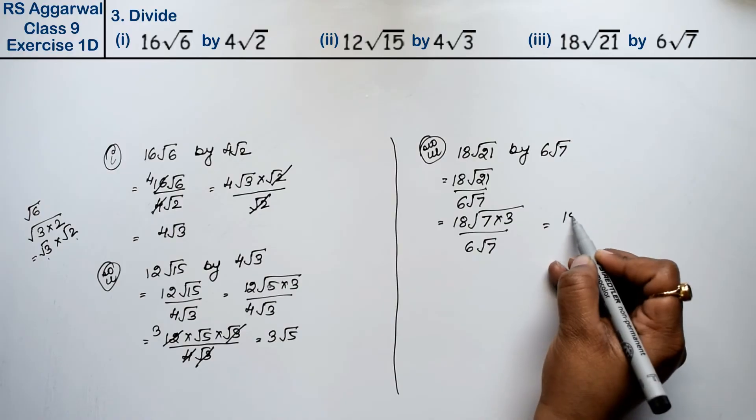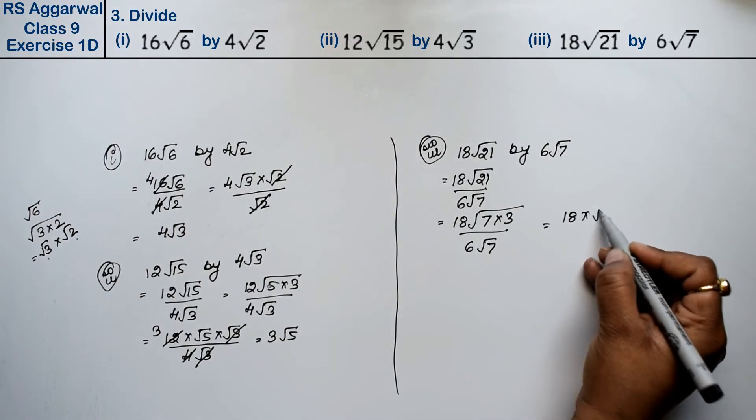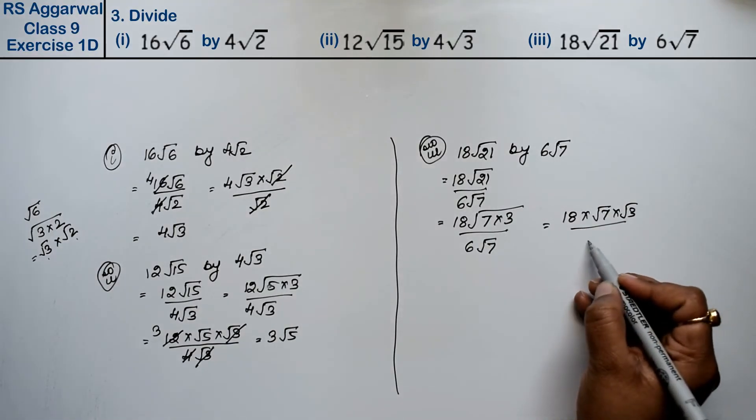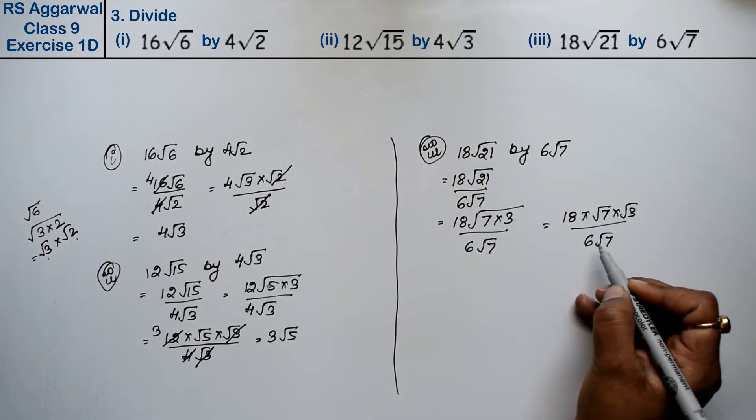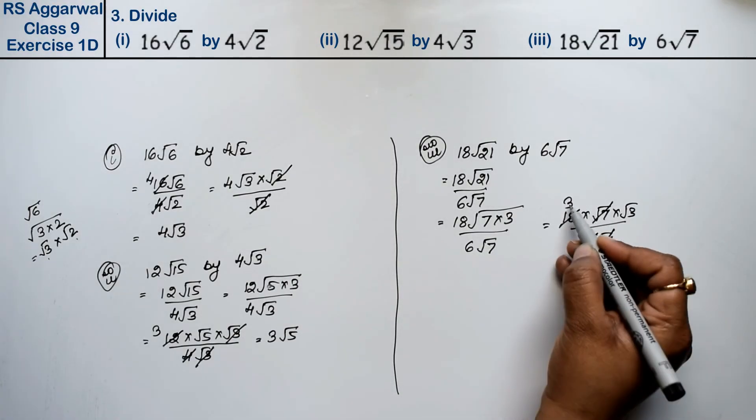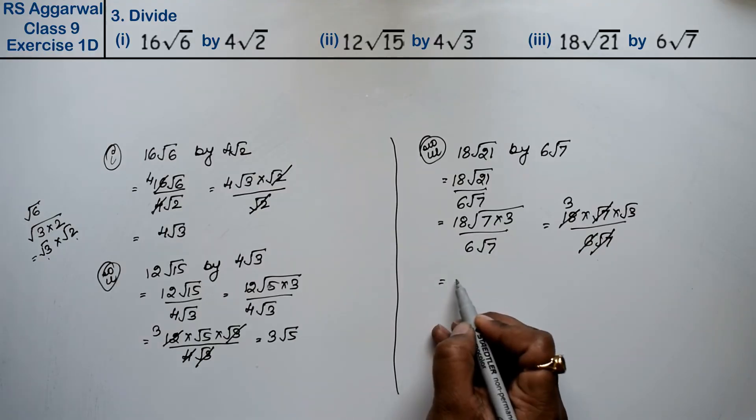We write √7 times √3 upon √7, so √7 cancels with √7. 18 divided by 6 is 3, so the answer is 3√3.